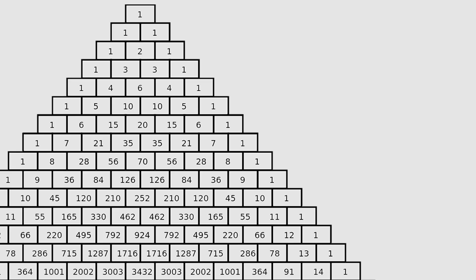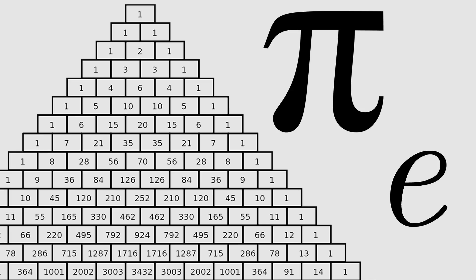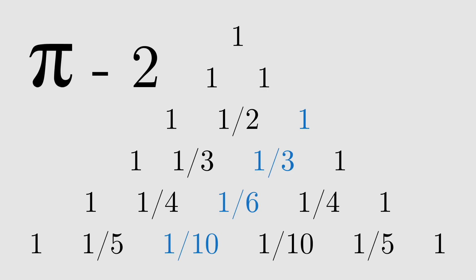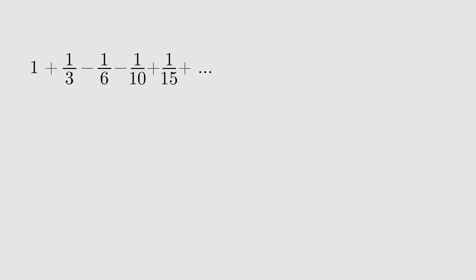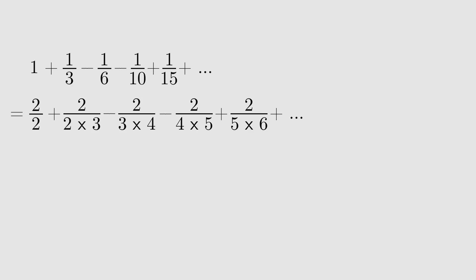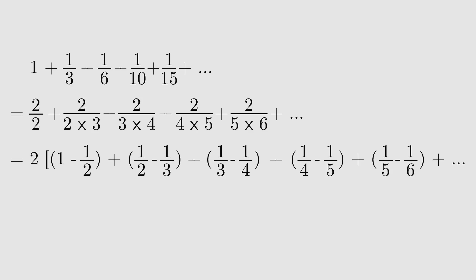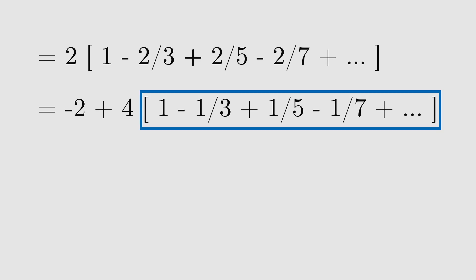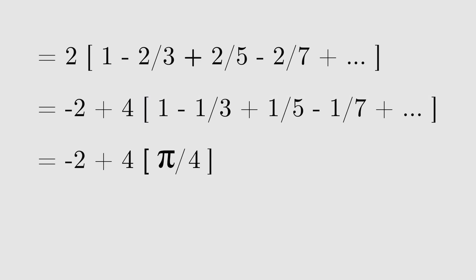The mathematical constants pi and e also make appearances in Pascal's triangle. To see pi, we look at the reciprocals of elements of the triangle. If you alternate adding and subtracting pairs of elements of the third diagonal, you get pi minus 2. First, write out each term explicitly, then express each fraction as the difference of two other fractions. You'll see that many of the terms cancel out, and the part in brackets is the so-called Leibniz formula for pi over 4, so our original sum is pi minus 2.